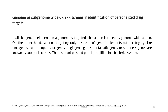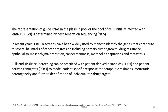Screens targeting only a subset of genetic elements — like oncogenes, tumor suppressor genes, angiogenic genes, metastatic genes, or stemness genes — are known as sub-pool screens. The resultant plasmid pool is amplified in a bacterial system, and the representation of guide RNAs in the plasmid pool or pool of cells initially infected with lentivirus is determined by next-generation sequencing.